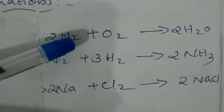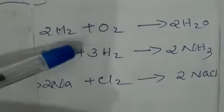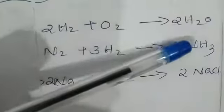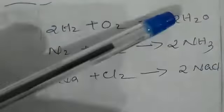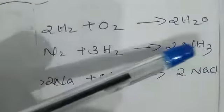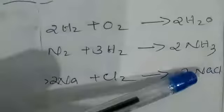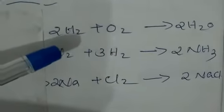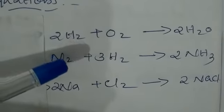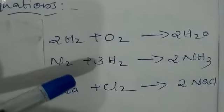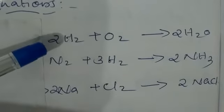Reactants are the substances taking part in a chemical reaction, and products are the substances formed as a result of the reaction. So in any equation, you should be able to identify which are the reactants and which are the products.